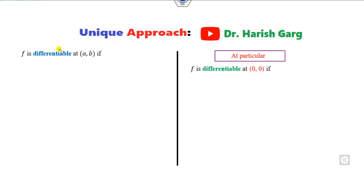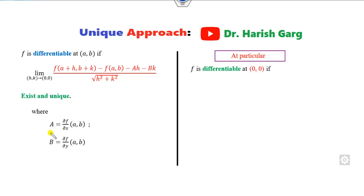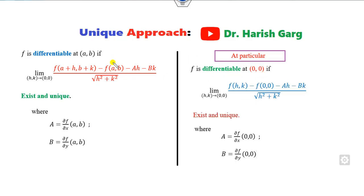To check differentiability at point (a,b) or (0,0): if the function is not continuous, it is not differentiable. If either fx or fy does not exist, again the function is not differentiable. If both exist and are continuous, apply the definition: lim[h,k→0] [f(a+h, b+k) - f(a,b) - Ah - Bk] / √(h²+k²). If this limit exists and is unique, the function is differentiable.